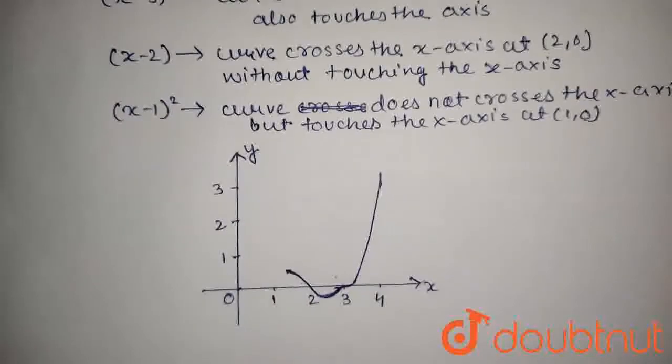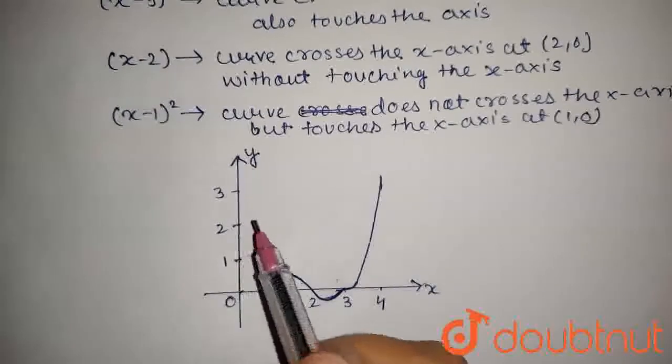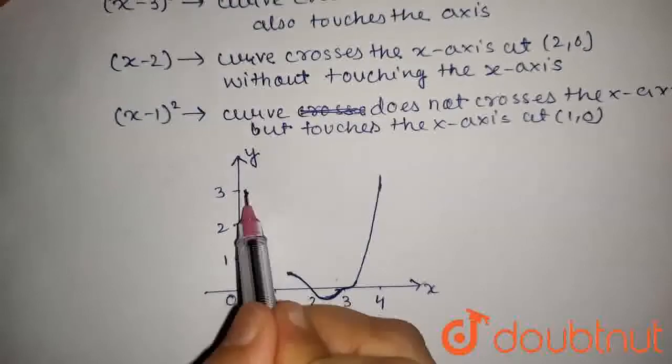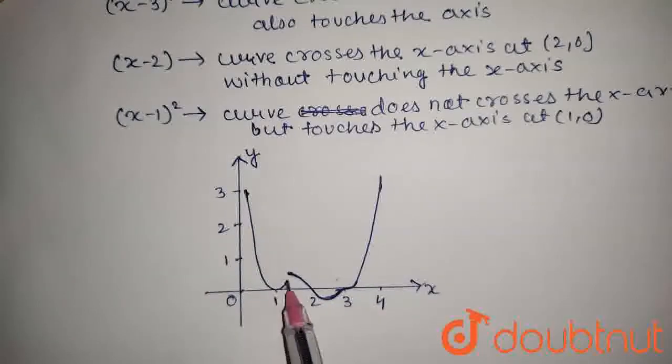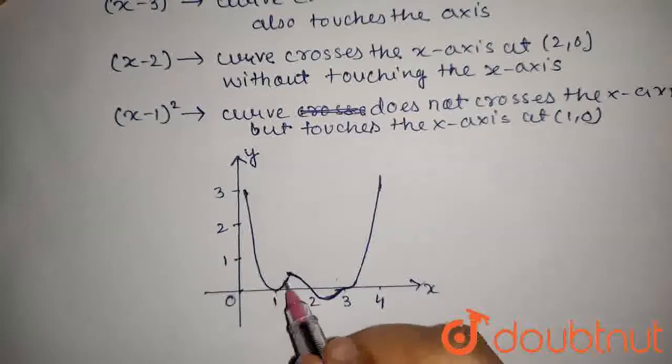So, its graph will be like this. So, its graph will be a parabola which touches x-axis at 1 and then here.